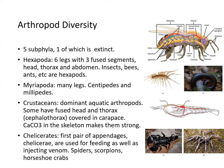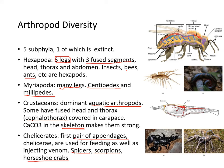There are five subphyla of arthropods, one of which is extinct. Hexapoda have six legs and three body segments — these include insects, bees, and ants. Then there are those that include centipedes and millipedes with many legs. Crustaceans are the dominant aquatic arthropods; some have a fused head and thorax called a cephalothorax, and they have calcium carbonate in the skeleton for strength. Then there are those that include spiders, scorpions, and horseshoe crabs, which have a first pair of appendages called chelicerae used for feeding and injecting venom.